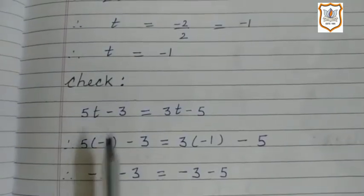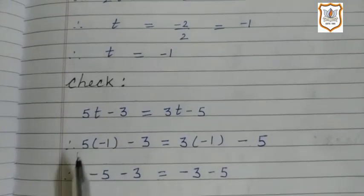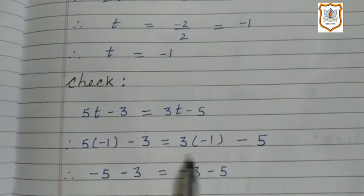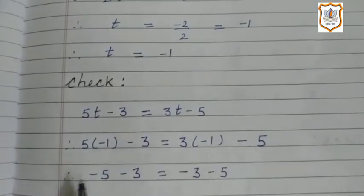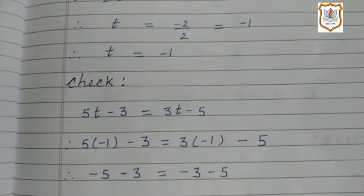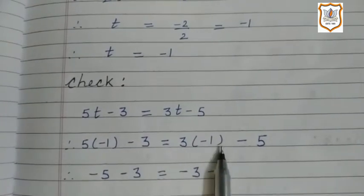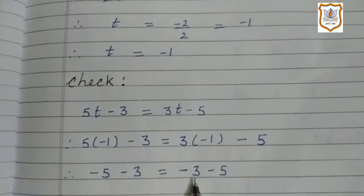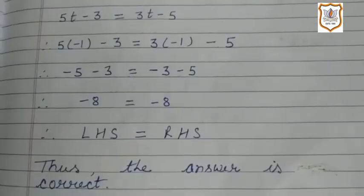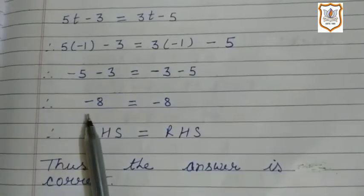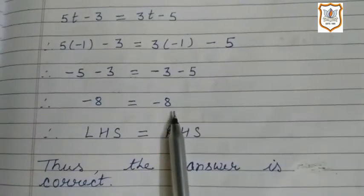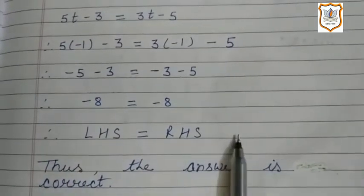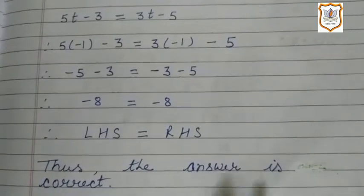Now we will check our result. We put the value of t, which is minus 1. So we write 5(−1) minus 3 = 3(−1) minus 5. Multiplying: 5 × (−1) = −5, and 3 × (−1) = −3. So we write minus 5 minus 3 = minus 3 minus 5. Both sides equal minus 8. So minus 8 = minus 8. Left hand side equals right hand side, thus the answer is correct.